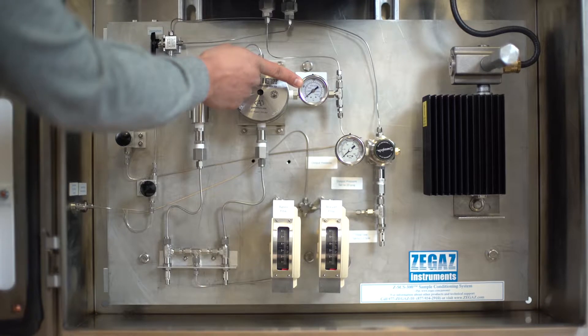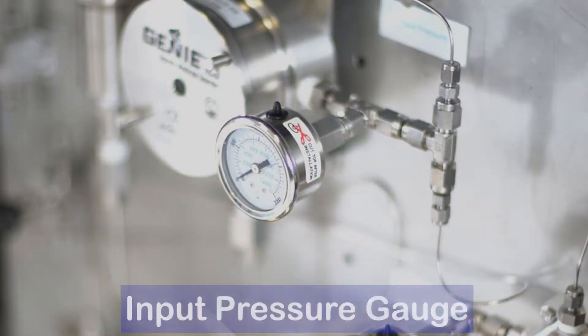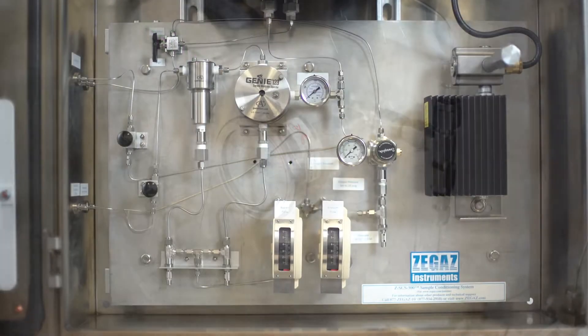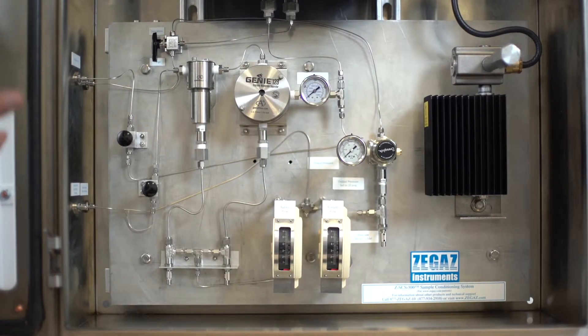Input pressure is indicated on the input pressure gauge, and then the sample will flow into the analyzer to be analyzed.